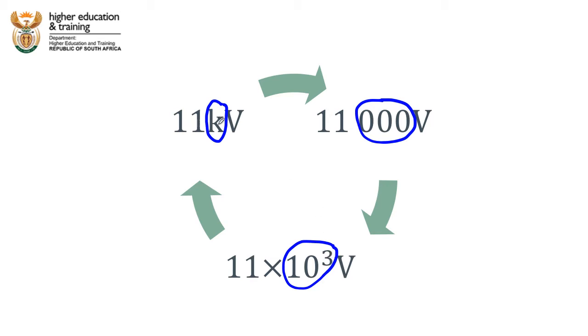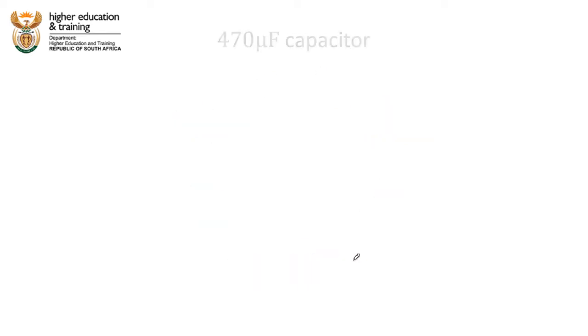Those are just different ways of representing the value 1,000. 11 kilovolts, 11,000 volts, 11 times 10 to the 3 volts. Let's take a look at another example.